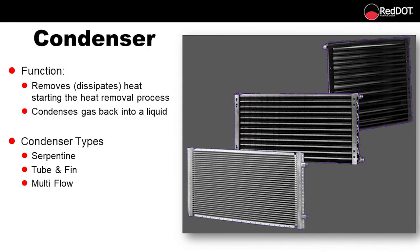The condenser: its function is to remove and dissipate heat, starting the heat removal process and condensing gas back into a liquid. There are three condenser types: the serpentine, tube and fin, and multi-flow. Please note the density of the cooling fins from one condenser to the other — the one on the left has very densely packed fins. If an AC system has a catastrophic failure, it is highly recommended that all major components be replaced, because it is impossible to remove all the metal debris from such tight nooks and crannies inside the condenser.